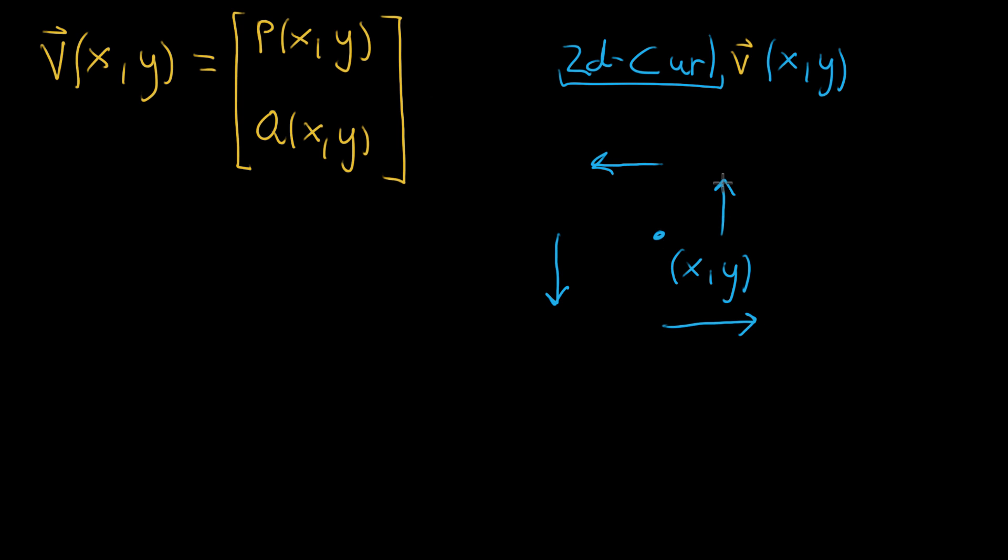So in terms of the functions, what that means is this vector to its right, whatever point it's evaluated at, that's going to be Q is greater than zero. So this function Q that corresponds to the Y component, the up and down component of each vector, when you evaluate it at this point, to the right of our XY point, Q is going to be greater than zero. Whereas if you evaluate it to the left over here, Q would be less than zero.